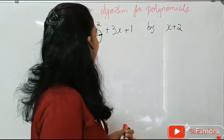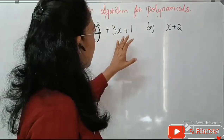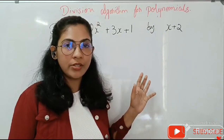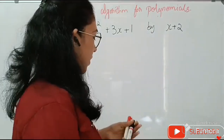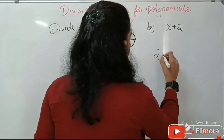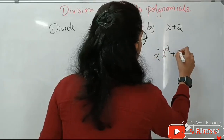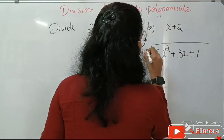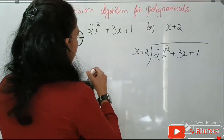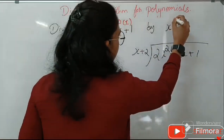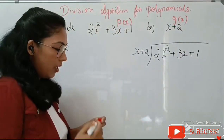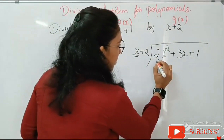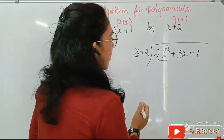Now we are moving to long division. We divide 2X squared plus 3X plus 1 by X plus 2. This is an example equation from your textbook. So 2X squared plus 3X plus 1 is P of X, and X plus 2 is G of X. Here the first term of the divisor is X and the dividend starts with 2X squared.